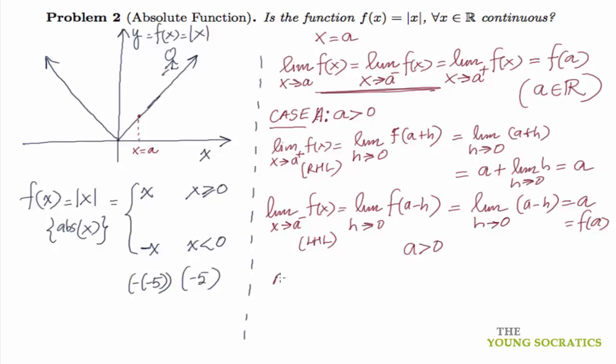Similarly, we can also prove it for Case B, where a is less than 0. It's just the same arguments. Now let's consider the last case, Case C, where a is equal to 0.